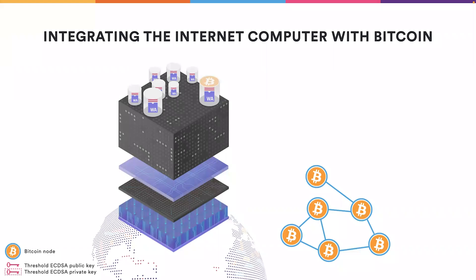This direct integration has as a major challenge to allow canisters to hold Bitcoin. For this we need one important component: an implementation of threshold ECDSA — the threshold elliptic curve digital signature algorithm. This allows us to have a private key secret shared among the replicas of a large subnet, and it allows canisters to request signatures computed by this subnet. The private key is never restored; instead, signatures are computed using cryptographic multi-party computation. This is the only secure way to compute ECDSA signatures on a blockchain, because the private key must not be stored on any single replica and is never reconstructed.